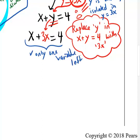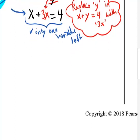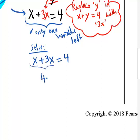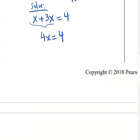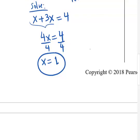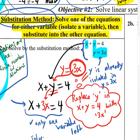Once you get down to an equation with only one variable, you can solve it. Combining like terms: x plus 3x equals 4 becomes 4x equals 4. Divide both sides by 4, and x equals 1. But remember, in the big picture we're trying to find the point of intersection of two lines. We've found the x value, but we still need the y value.